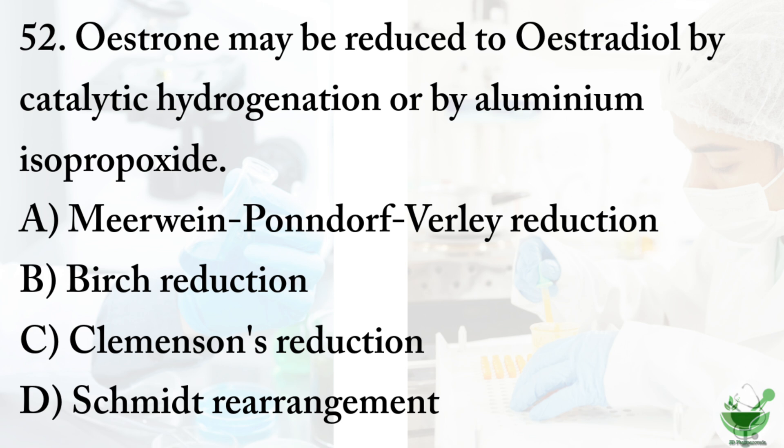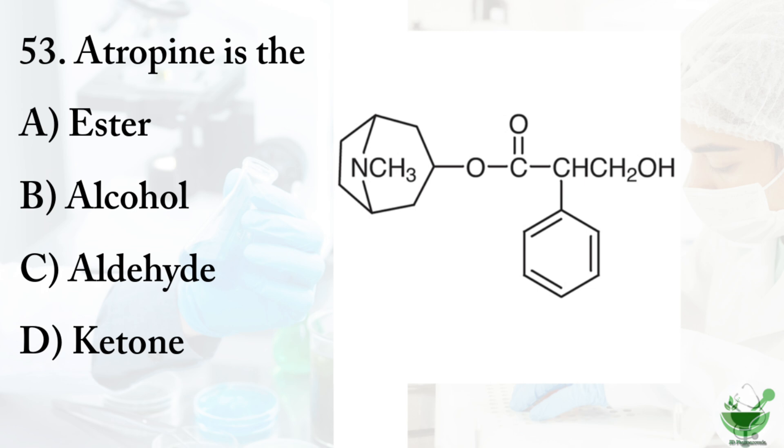Question number 52: Estrone may be reduced to estradiol by catalytic hydrogenation or by aluminium isopropoxide. The options are: option A, Meerwein-Pondorf-Verley reduction; option B, Birch reduction; option C, Clemmensen's reduction; option D, Schmidt rearrangement. The correct option is option A, Meerwein-Pondorf-Verley reduction.